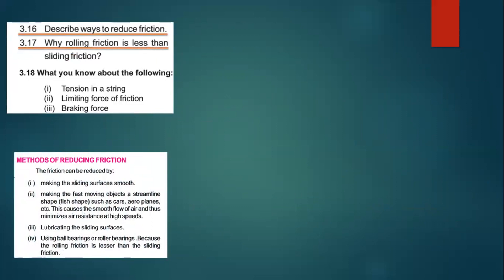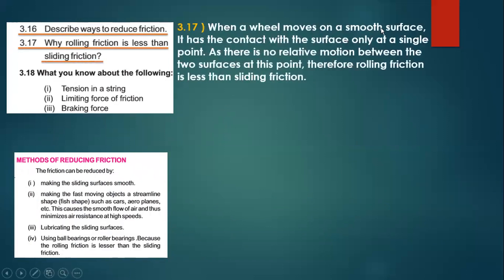Question 3.17 — why is rolling friction less than sliding friction? When a wheel moves on a smooth surface, it has contact with the surface only at a single point. Since there is no relative motion between the two surfaces at this contact point, rolling friction is less than sliding friction. In the case of sliding, more points are in contact with the surface so the force of friction is greater.